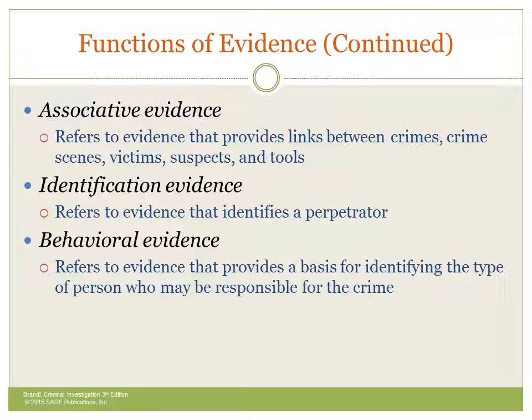Behavioral evidence refers to evidence that identifies the type of person who may be responsible for a crime. You'll see this in serial killer cases where there's an MO, modus operandi, where they do the same thing over and over again. A behavioral scientist may be able to say this is the type of person that would normally commit the crime — they come up with a behavioral profile. We'll discuss that more in depth in a later chapter in this course.